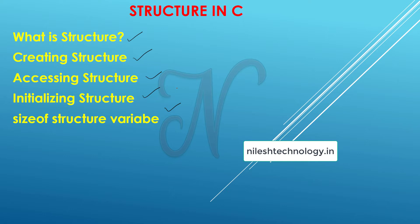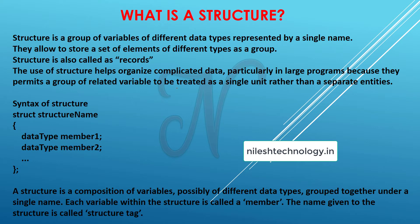First we see what is a structure, what is the need of a structure, and when structure will be used. Structure is a group of variables of different data types represented by a single name. Structure is also called a record. They allow storing a set of elements of different types as a group, creating one group and defining multiple types of data in a single group.